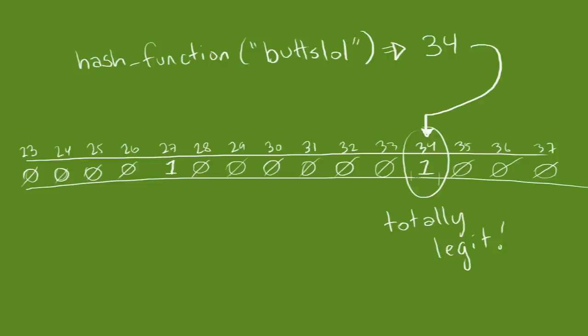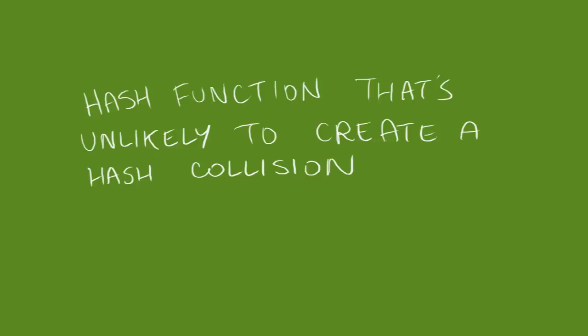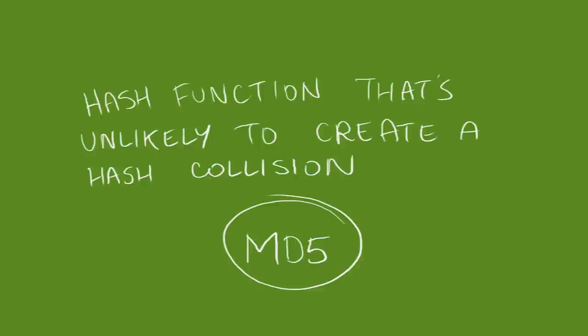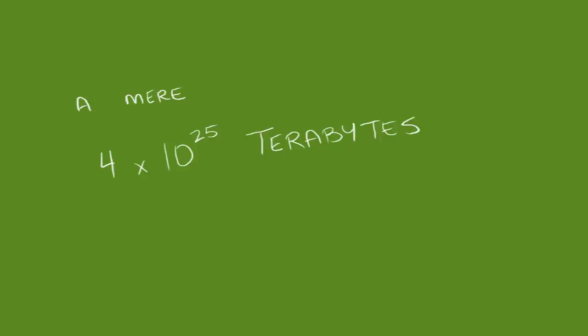We could use a hash function that's unlikely to create a hash collision. The chance of a hash collision is incredibly low in MD5, for example. We just need an array with as many available bits as there are possible outputs from MD5. Just 4 times 10 to the power of 25 terabytes. Okay, maybe that's unrealistic. It's certainly a lot more trouble than just storing the original one megabyte database.